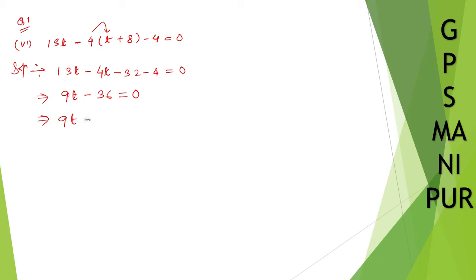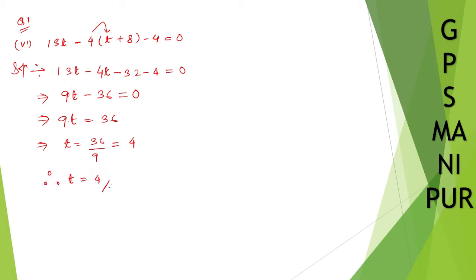9t equals 36. Bringing 36 to this side: t equals 36 divided by 9. Since 9 fours are 36, therefore t equals 4.